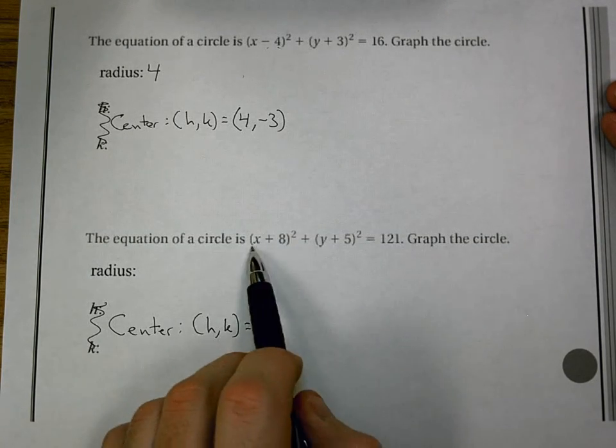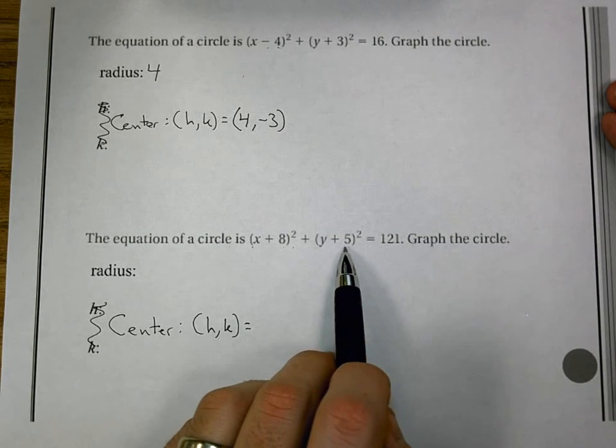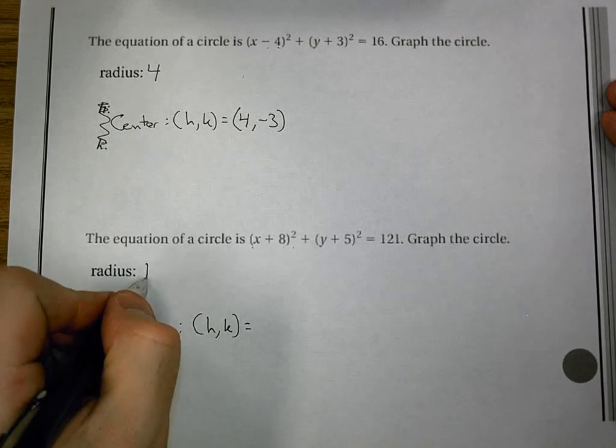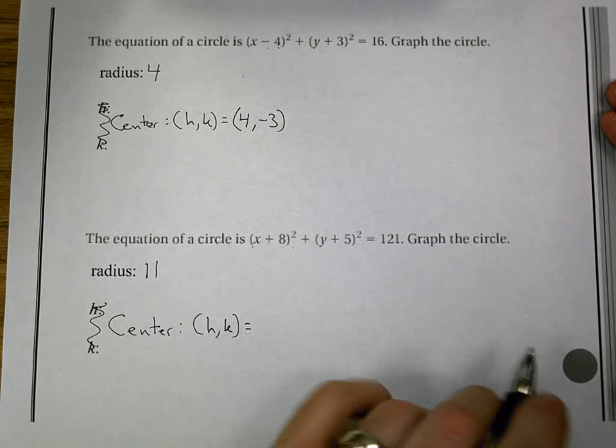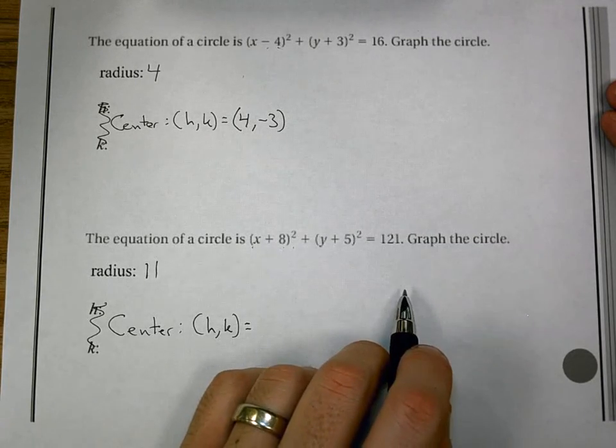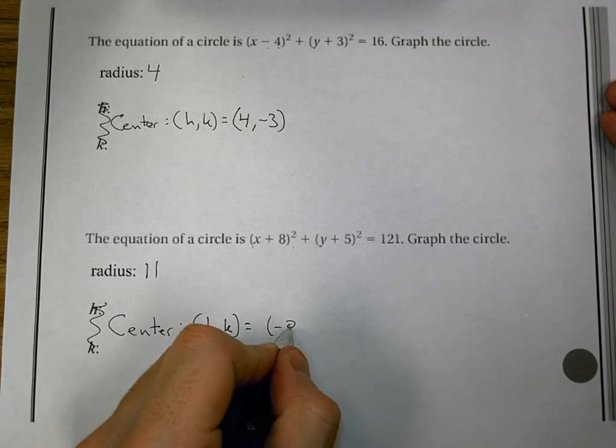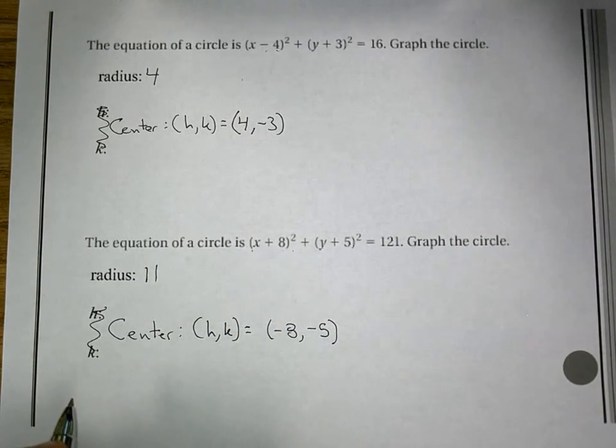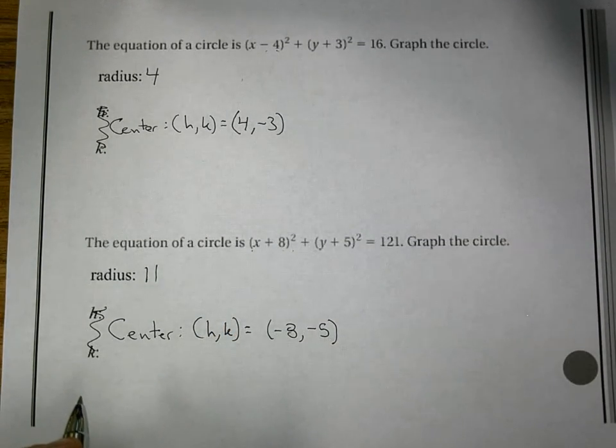Next equation, (x+8)² + (y+5)² = 121. I take the square root of that to find my radius. That would be 11. My center, I take the opposites of those. It would be (-8,-5) for my center. So my radius is 11 and my center is at (-8,-5).